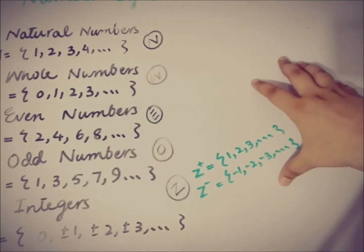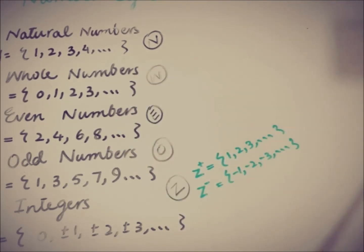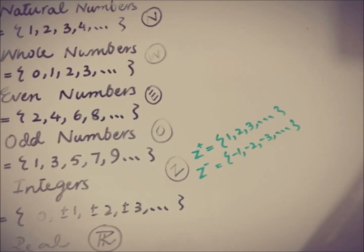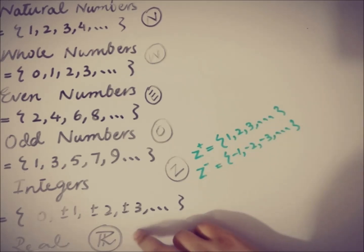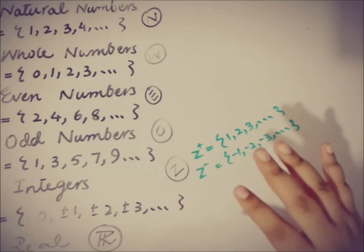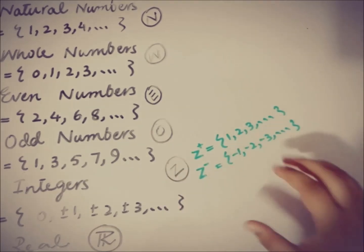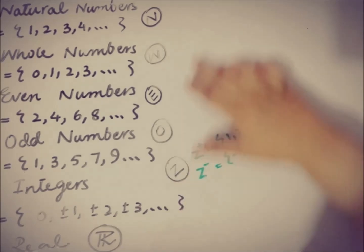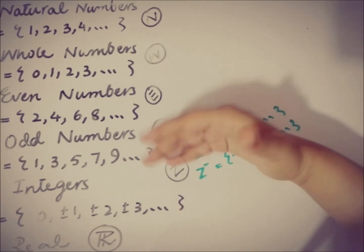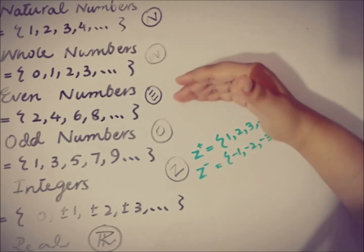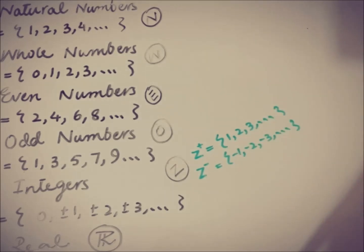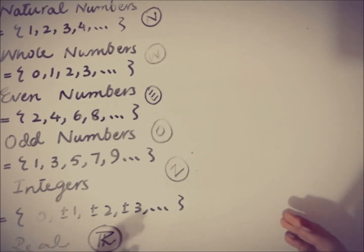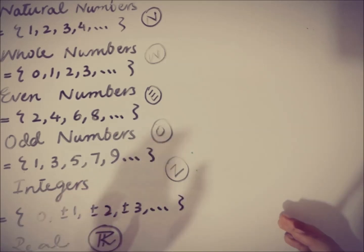All of these numbers are real numbers, represented by R. Every positive, every negative, every fraction, every decimal — whatever number you may think of — will come in the set of real numbers. We are not talking about complex numbers here. So every natural number, every whole number, every even number, every odd number, and every integer is a real number.